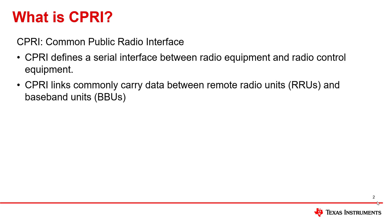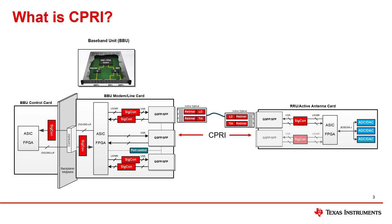CPRI links commonly carry high-speed data between remote radio units, called RRUs, and baseband units, called BBUs. This block diagram shows an example of a BBU system, an RRU system, and the CPRI link between these systems, which is responsible for facilitating high-speed communication between these systems. This block diagram also shows locations where signal conditioning may be necessary, as indicated by the SIGCON block.